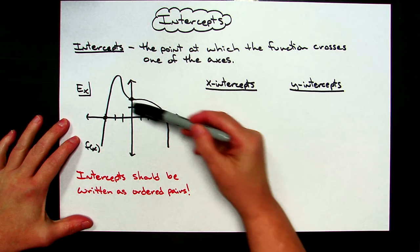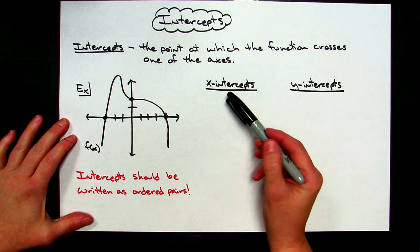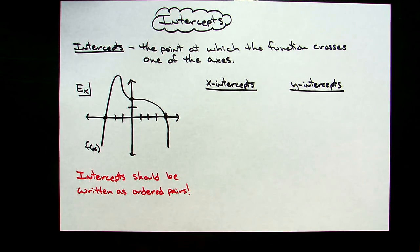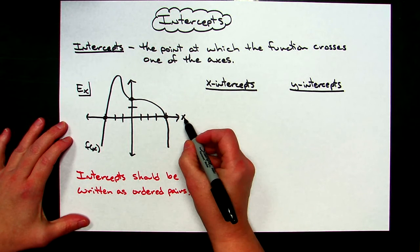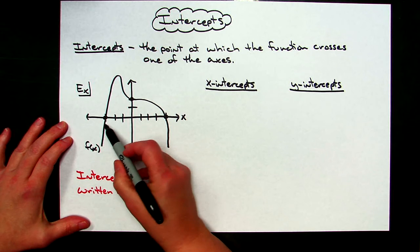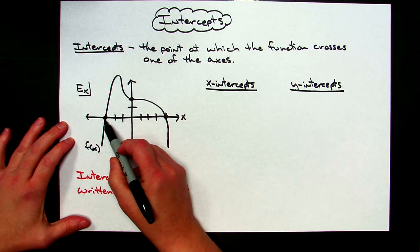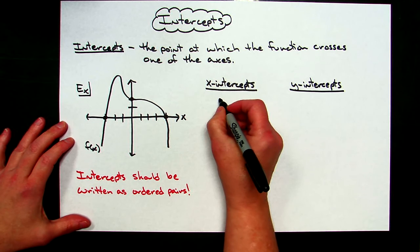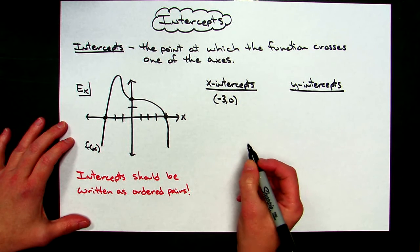So I have drawn a function here and I've named it f of x. If I were going to locate the x-intercepts, then I would need to go to the x-axis and find all the points where the graph crosses. The graph crosses the x-axis at negative 3, so as written as an ordered pair, I would have negative 3, 0 as an x-intercept.